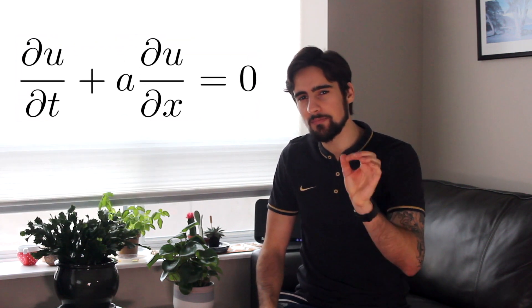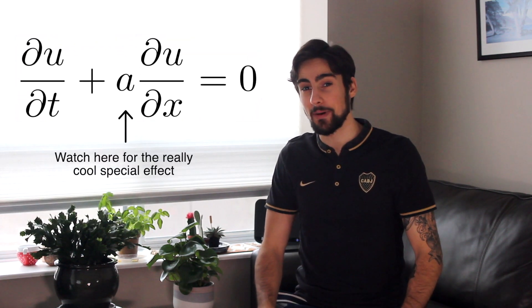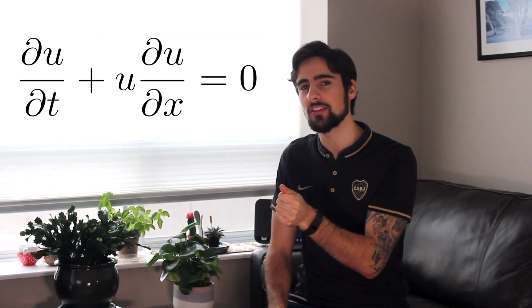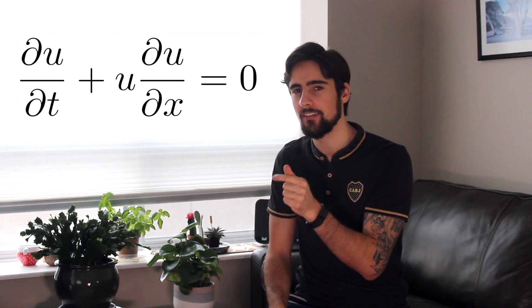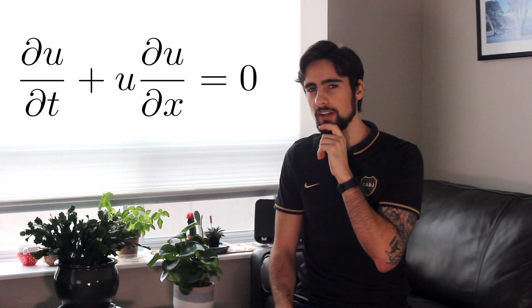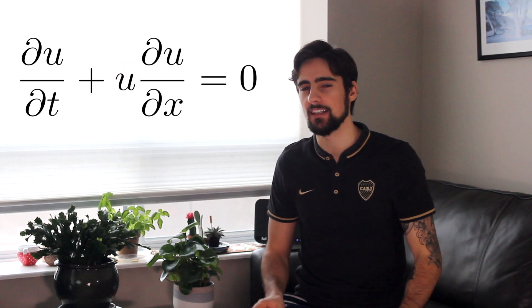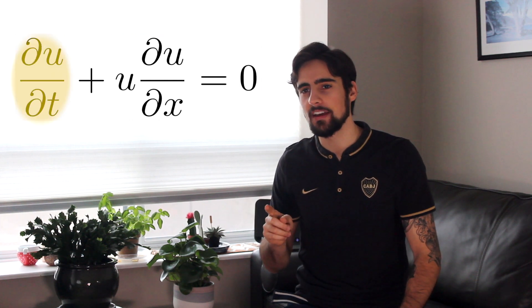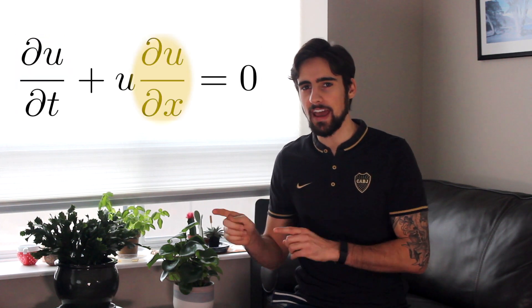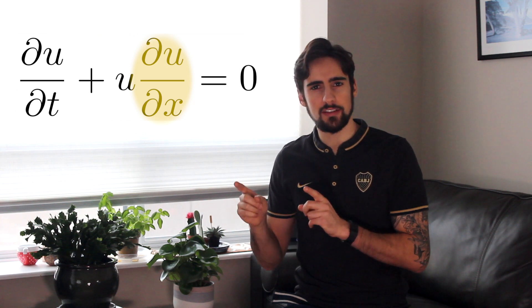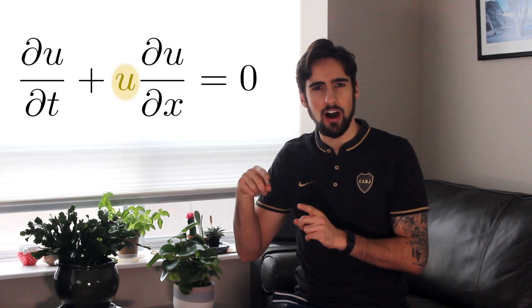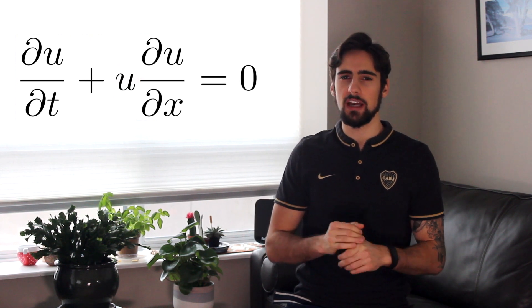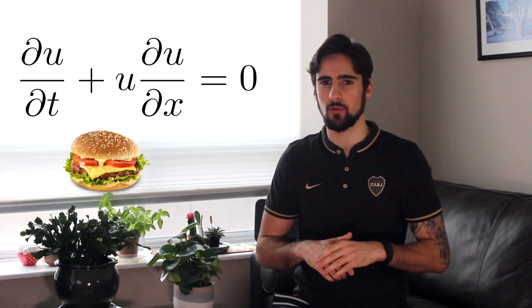That's not very interesting though, so let's make it a little bit more spicy. What I've done now is I've switched the constant speed a for u. So if I look at this equation now, what it says is if I have a wave u, as time goes by, it's going to move in the direction x according to the speed of whatever height the wave is at that point. It's a bit weird.